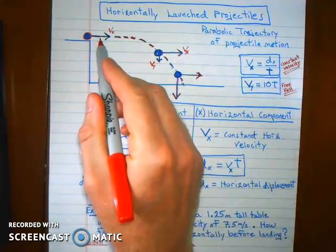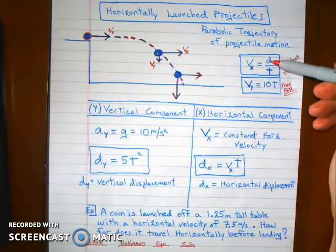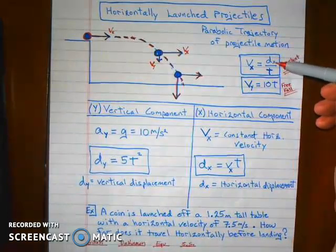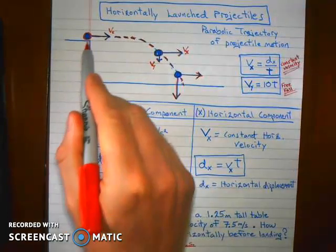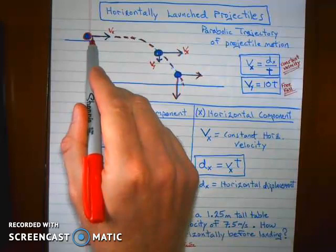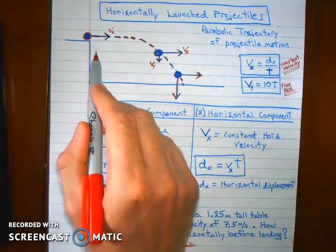So you can calculate that velocity by just knowing the distance it travels in the x direction. It's the horizontal displacement divided by the time. But as it falls, gravity accelerates it at about 10 meters per second each second.